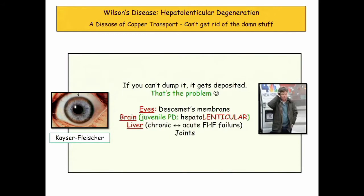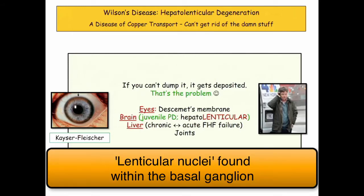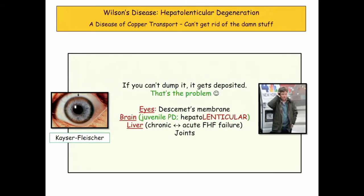Copper dumps into the eye, forming Kaiser-Fleischer rings in Descemet's membrane. The other key thing is juvenile Parkinson's disease — hepatolenticular — the lenticular nuclei, the basal ganglia. Patients with liver disease plus Parkinson's, especially a young patient, equals Wilson's disease. Those are the exam questions. Wilson's disease can be a chronic disease, but can also be associated with acute fulminant hepatic failure.